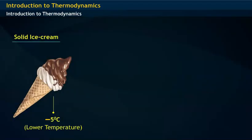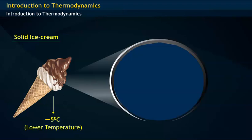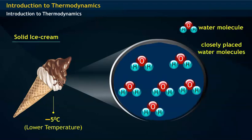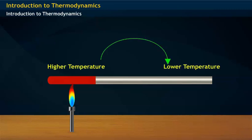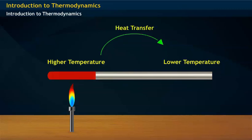Actually, an ice cream consists of closely placed water molecules attracted by intermolecular forces of attraction, that is, by hydrogen bonding. It may be noted that always, energy in the form of heat moves or transfers from higher temperature to lower temperature. That is, heat transfer occurs.